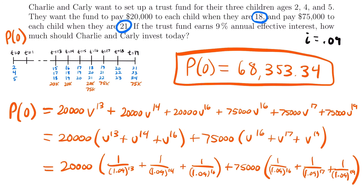So $68,353.34 is the answer — the present value for this problem. That was a lot of work, but not too difficult. The hardest part was figuring out what year all the payments were coming in, and drawing it out on the timeline helped set up the equation and simplifications to reach our final calculation. That's all for this example video — if you have questions, put them in the comments, and I'll see you next time.